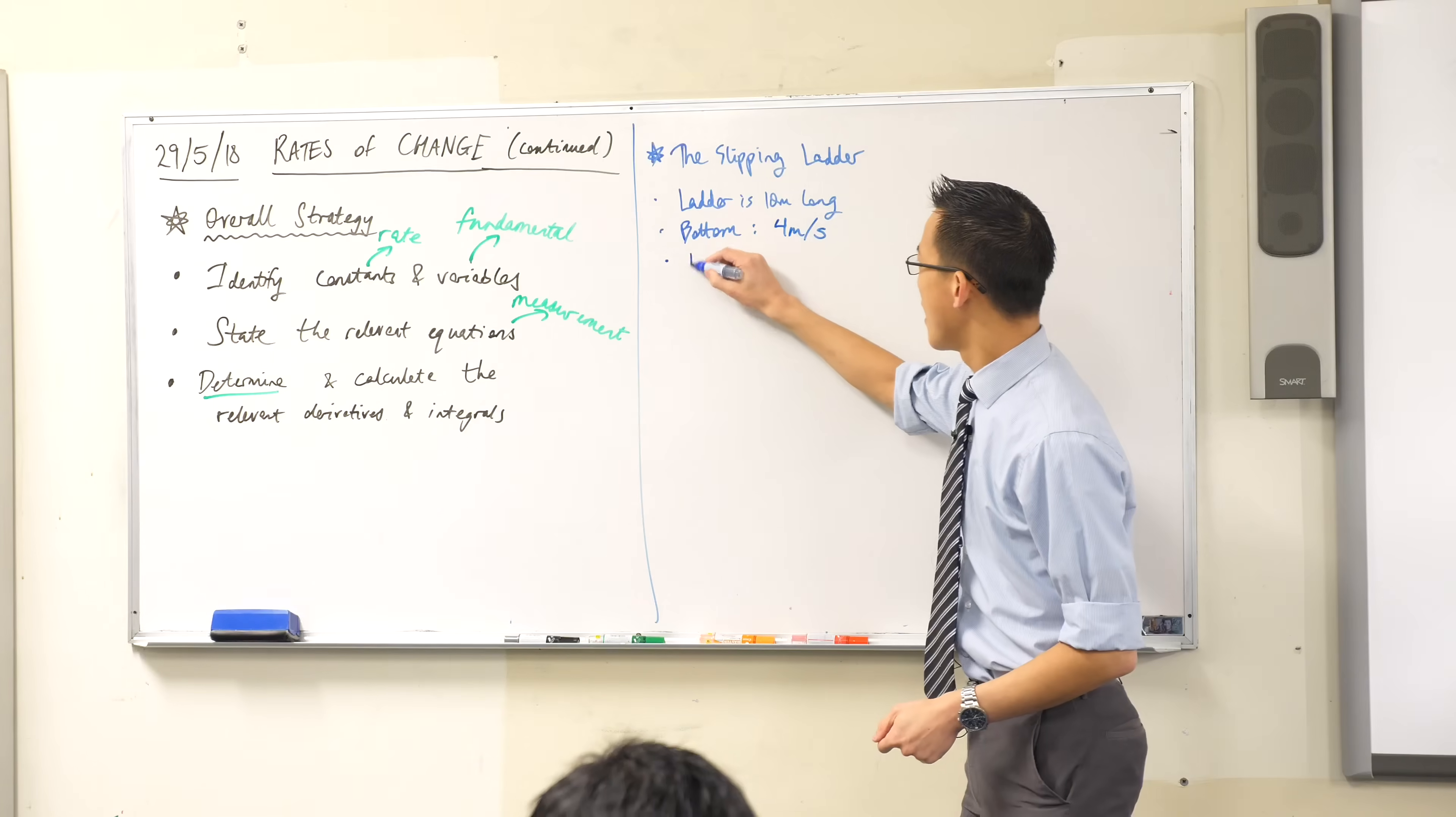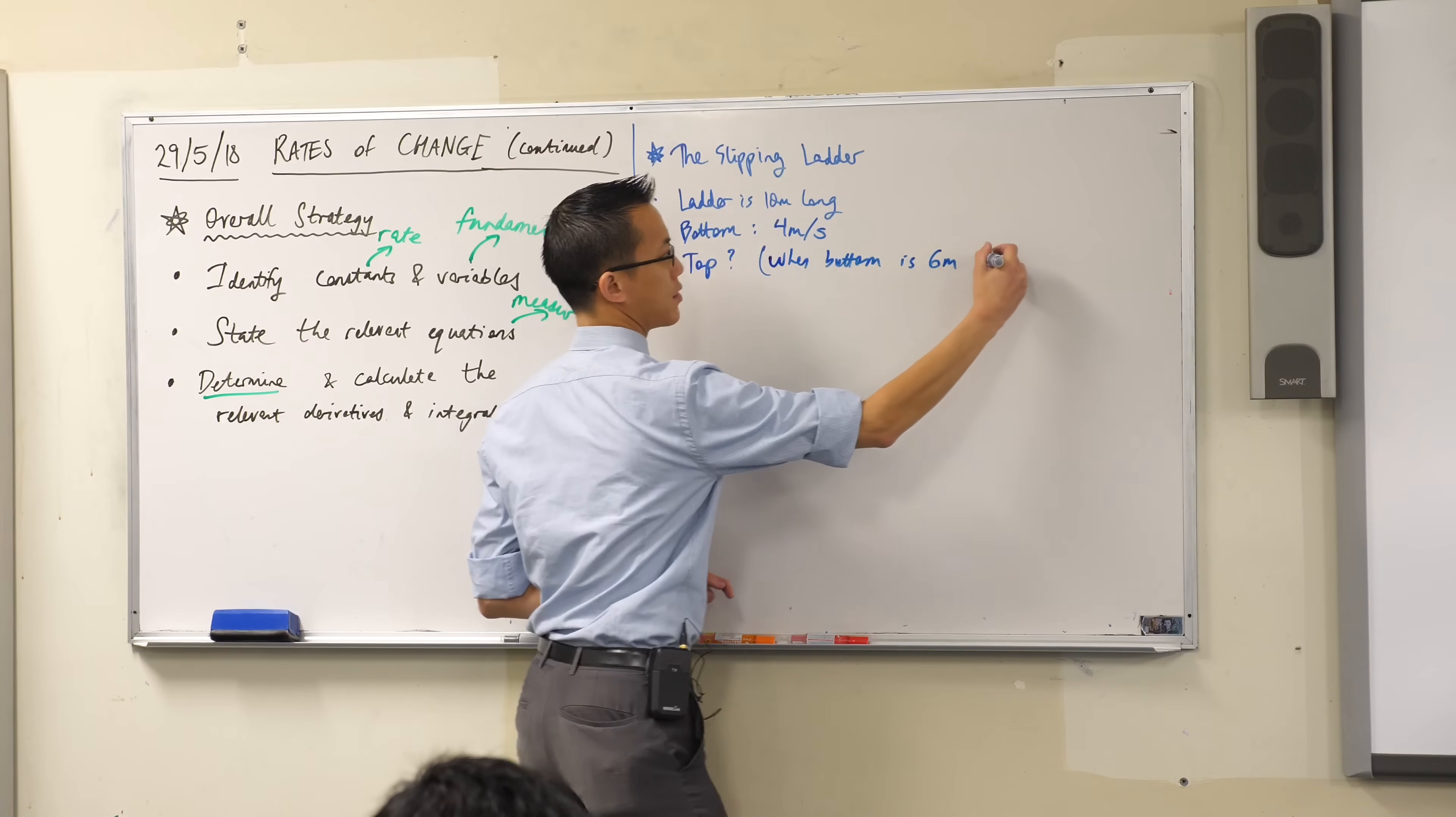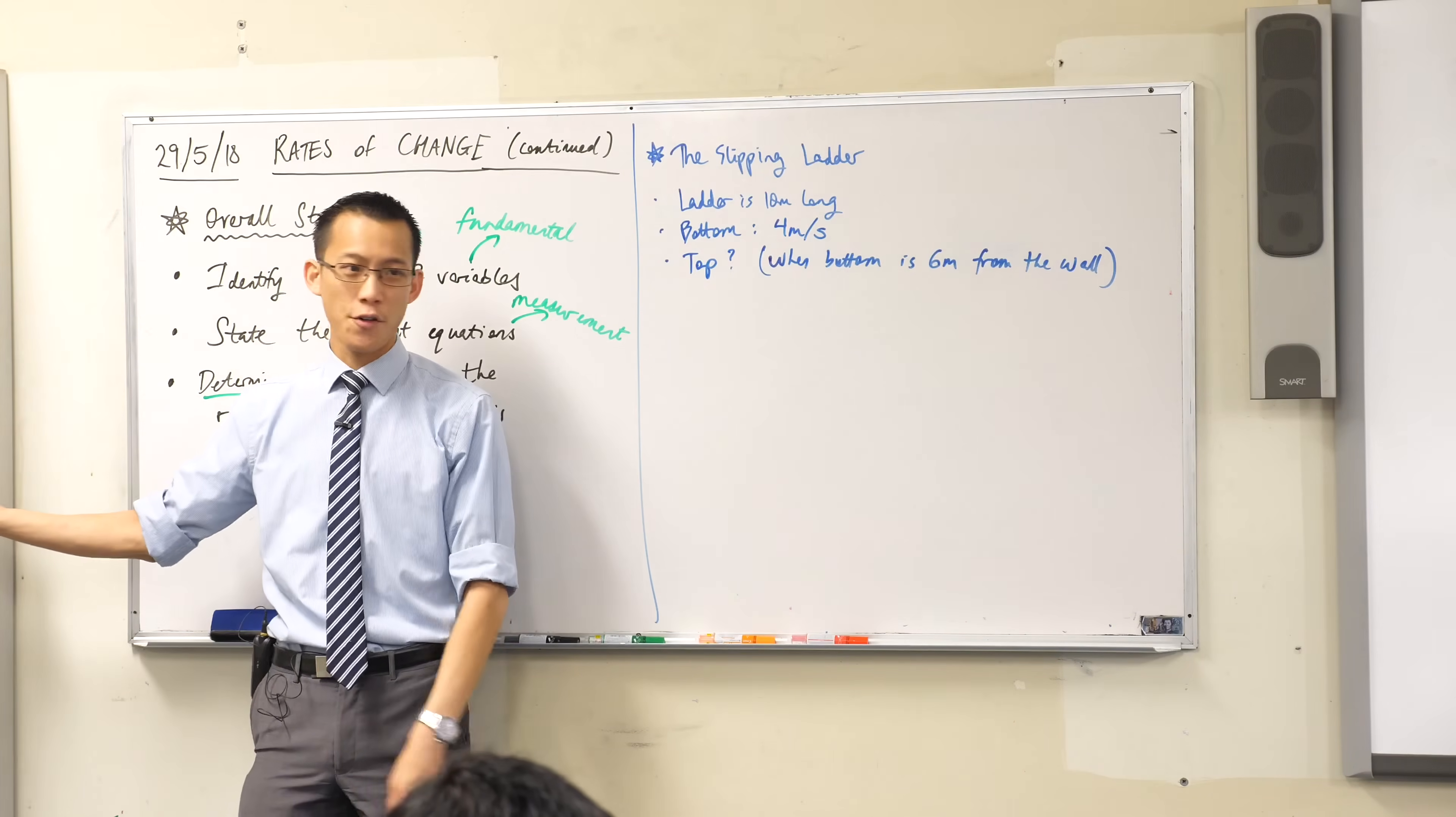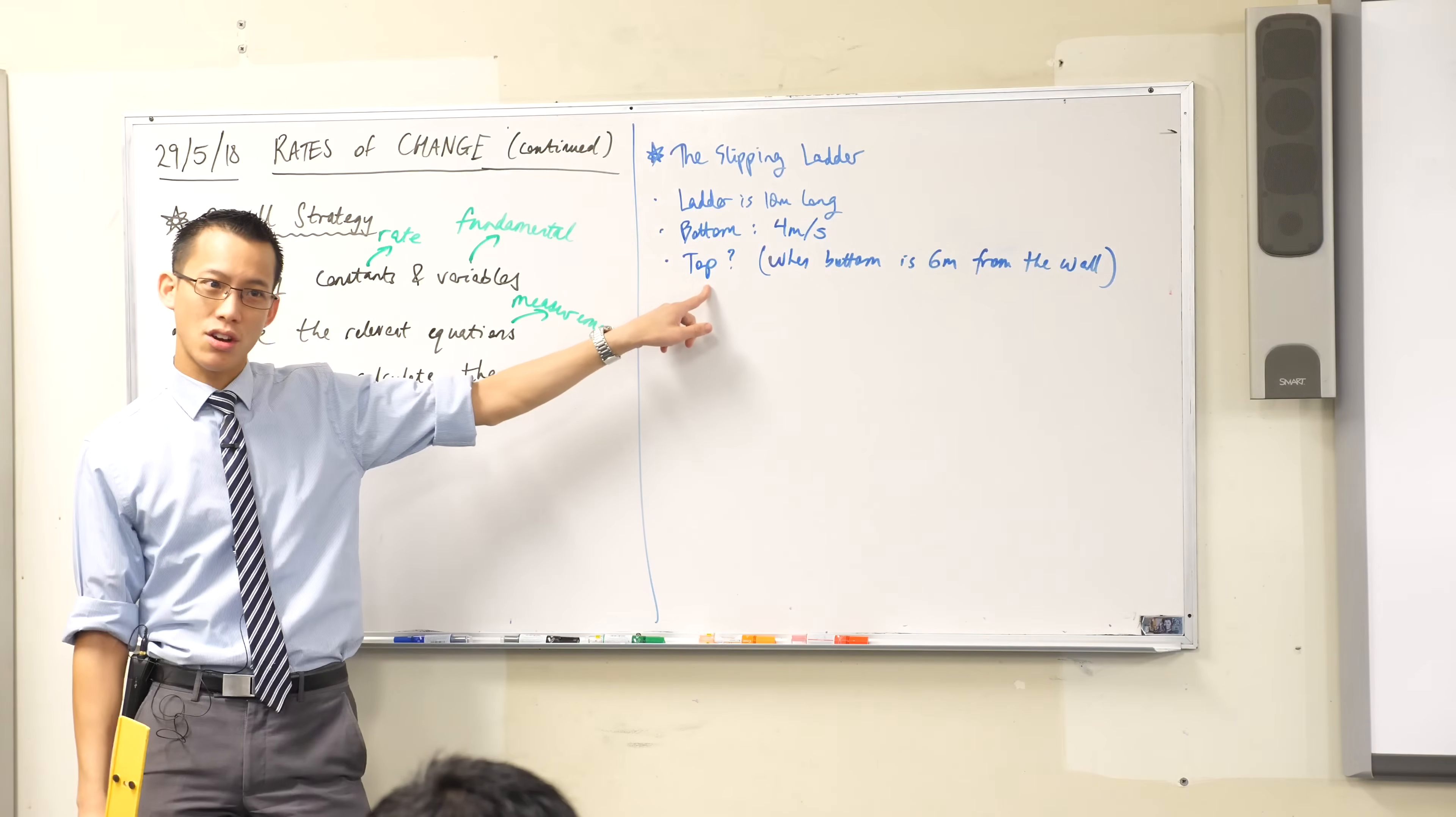So now the question is, how fast is the top moving? And I'm going to give you a particular value for where it is, which as you'll see in a minute is going to become important. When the bottom is 6 meters from, I said it was resting on a wall, yeah? So when it's slid so that it's now 6 meters away from the wall, here's my ladder. If it was resting like this, which is a bit unstable, it would be 0 meters from the wall. Can you see the bottom here? It's on the wall. But it starts to slide. At a certain moment, this distance here along the ground will be 6 meters. At that particular instance, how fast is the top moving?